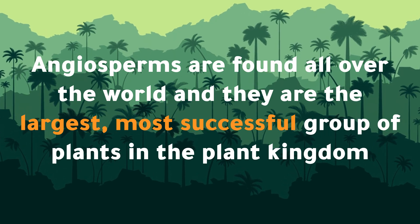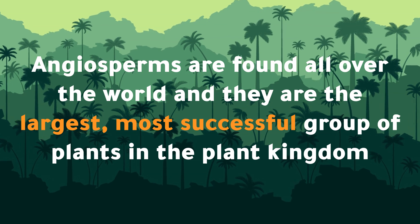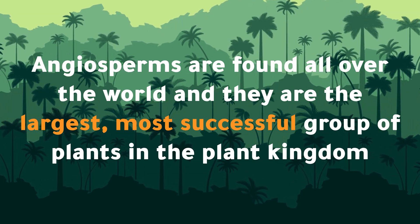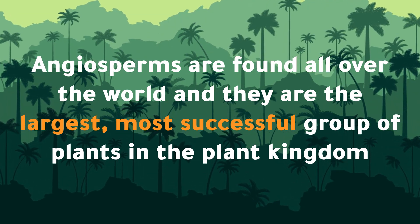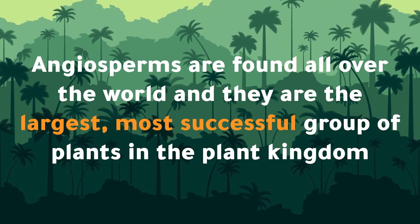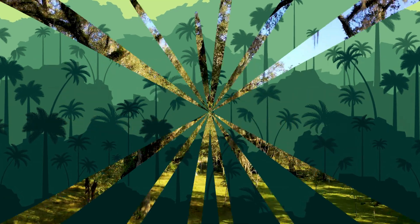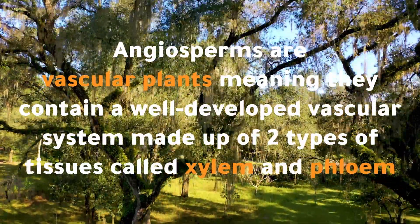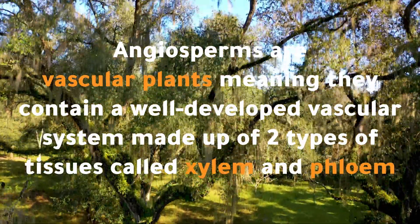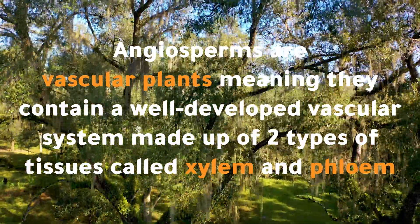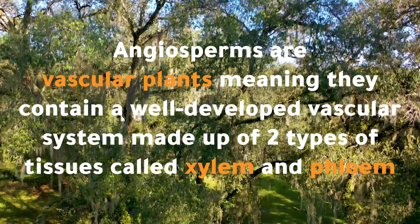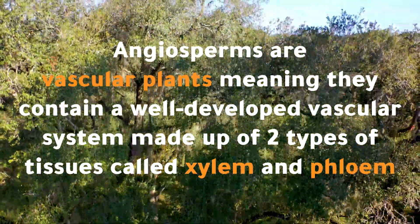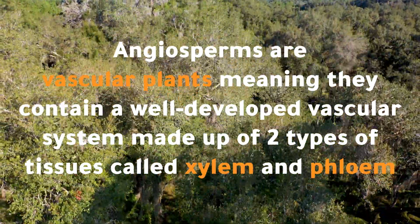Angiosperms are found all over the world, and they are the largest, most successful group of plants in the plant kingdom. Angiosperms are vascular plants, meaning they contain a well-developed vascular system made up of two types of tissues called xylem and phloem.